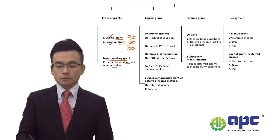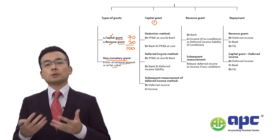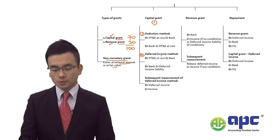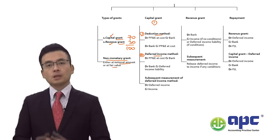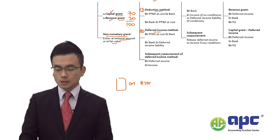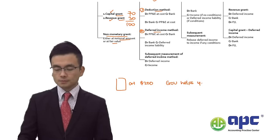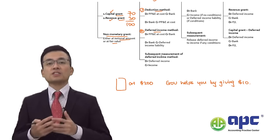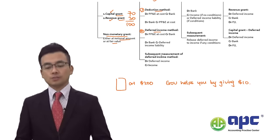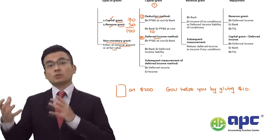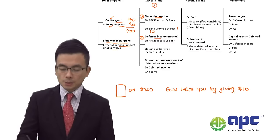For capital grants, IAS 20 provides two methods: the deduction method and the deferred income method. Under the deduction method, if you acquire equipment at $200 and the government gives you $10 as a capital grant, you debit bank $10 and reduce the PP&E at cost by $10, because the net spend to your business is $190.